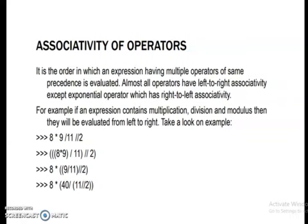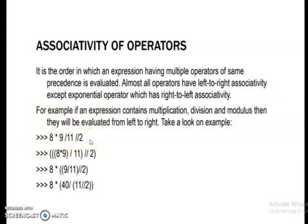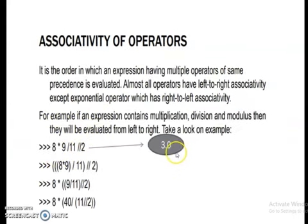See here one example: division, floor division 2. All the operators have the same precedence, so it will read from left to right. It will do the multiplication first — 8 times 9 is 72. Then 72 divided by 11 gives 6.6. Then floor divided by 2 gives the answer 3.0. It will take only the integer part, not the decimal part.